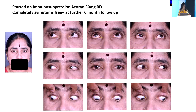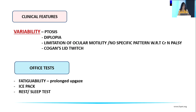All these patients — adult onset or juvenile — will need a long-term treatment regime. Myasthenia is something which, after diagnosis, we need to explain carefully to the patient regarding their lifespan management. The important clinical variability includes variability of ptosis, diplopia, and limitation of oculomotility; there is no specific pattern as to which cranial nerve palsy it may mimic, and Cogan's lid twitch may be present. Simple bedside tests include fatigability on prolonged upgaze, the ice pack test, and the rest/sleep test — the latter being particularly useful in children who may not cooperate with other tests.